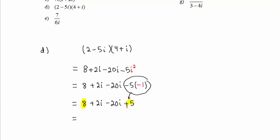Gathering like terms, 8 plus 5 is 13, and 2i minus 20i is negative 18i. Our final answer is 13 minus 18i.